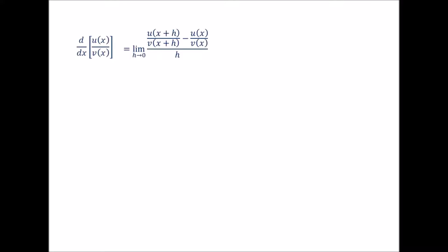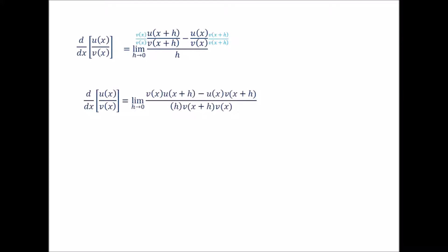If you evaluated the limit right now — meaning if you plugged in h equal to 0 — you'd get u of x over v of x minus u of x over v of x in the numerator, which is just 0, and 0 in the denominator, giving 0 over 0, which is indeterminate. So we have to do some manipulation to take this expression out of indeterminate form. To get common denominators, we multiply u of x plus h over v of x plus h by v of x over v of x, and we multiply negative u of x over v of x by v of x plus h over v of x plus h, and get the following. That h is still in the denominator, so we still have the same problem.